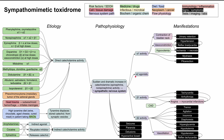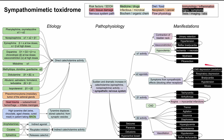Lastly, alpha-2 agonists typically cause symptoms from sympatholytic effects — the drug hits the alpha-2 receptor while also blocking other drugs from hitting alpha-1, beta-1, and beta-2. These effects are largely the opposite of what we've seen. Alpha-2 agonists can cause CNS depression, respiratory depression, bradycardia, hypotension, and miosis (pinpoint pupils). An example is clonidine, which causes these symptoms in overdose.